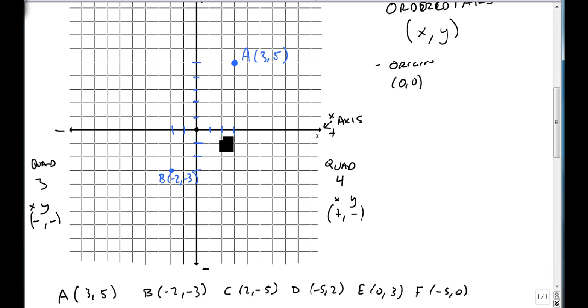C is at (2, -5). So over 2 and down 5, which is in quadrant 4.